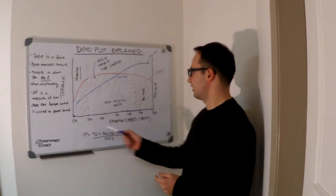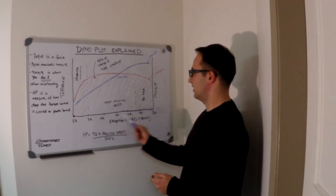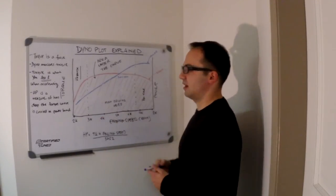So first of all, this is how your dyno plot looks like when you get a printout for the dyno. On the bottom, you have your engine speed and RPM, and on the sides, you have your torque and power numbers.